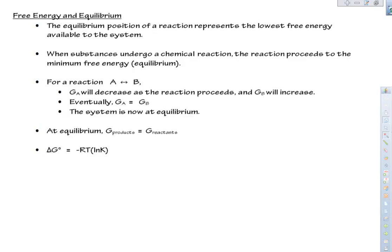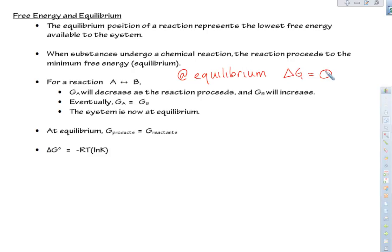Our last topic in Chapter 16 looks at free energy — that delta G — and its relationship to equilibrium. Equilibrium will stalk you forever; Le Chatelier is in your dreams forever. The equilibrium position of a reaction represents the lowest free energy available to the system. Reactions proceed to this minimum free energy, and at equilibrium, delta G equals zero. We want to proceed to this state of low free energy where delta G will equal zero.